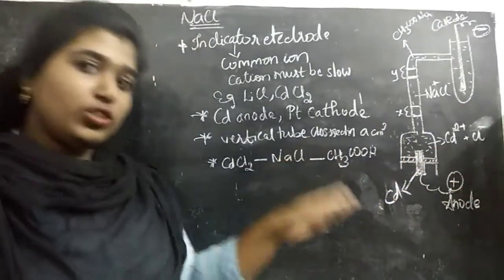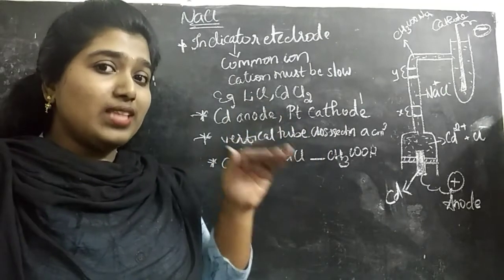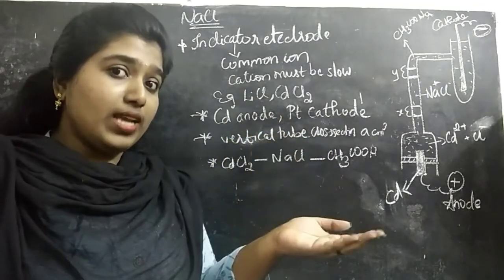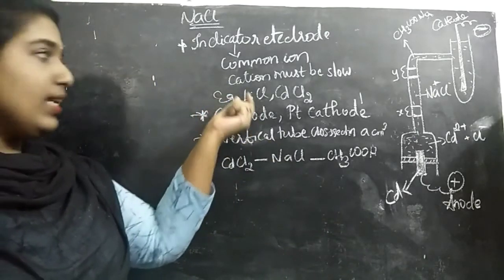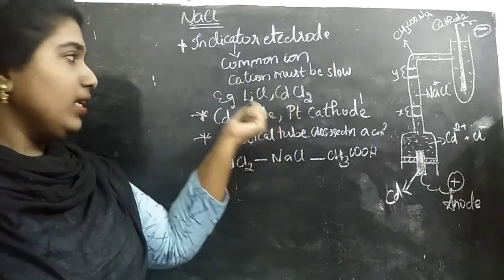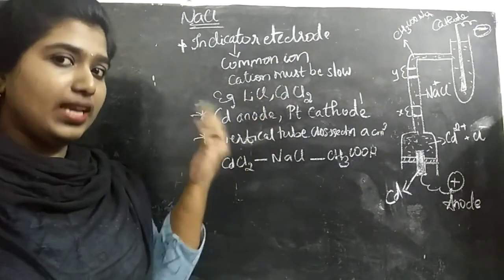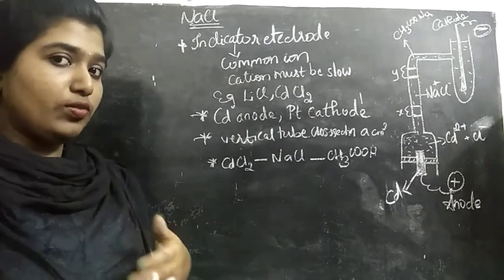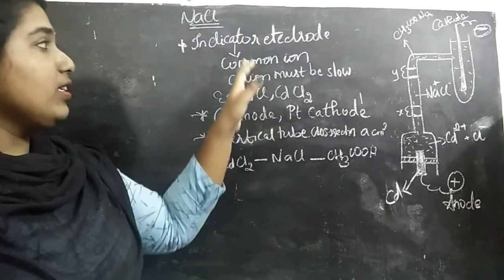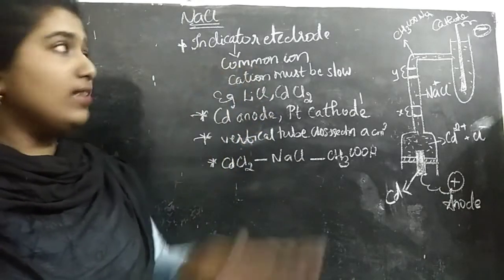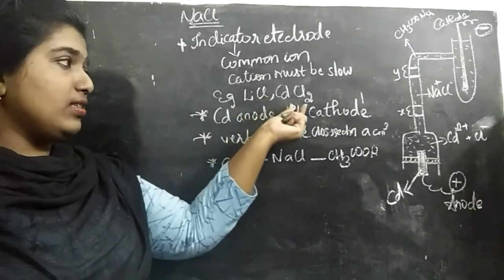We add the indicator electrode in the anode. The indicator electrode must have a cation which must be moving slower than that of the electrolyte we have taken for study. We can take lithium chloride or cadmium chloride, so that lithium or cadmium 2+ will be slower than the Na+ ion. It should have a common ion. Here we have NaCl, LiCl and CdCl2, so chlorine is common.